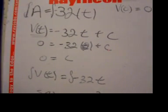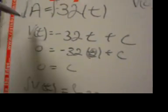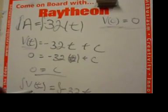Velocity is equal to negative 32 times t, that's how many seconds, plus a c. Since we know that our original velocity is zero, c is equal to zero. Therefore, our velocity is negative 32 feet per second.